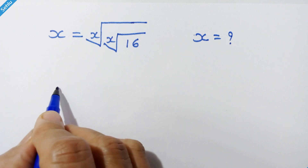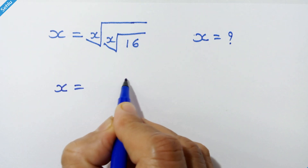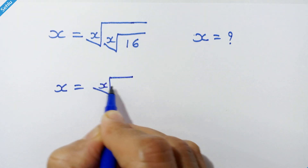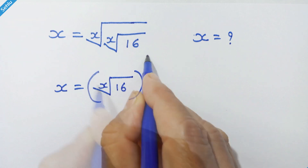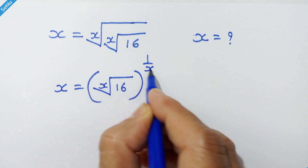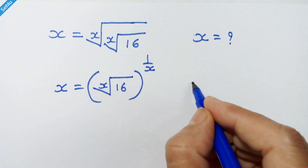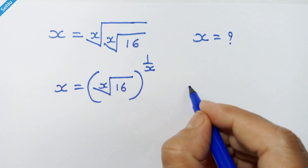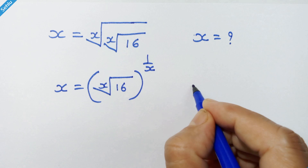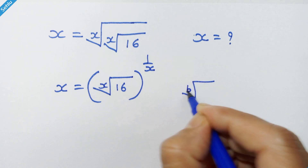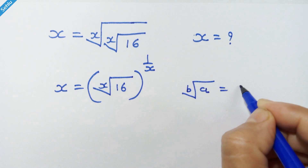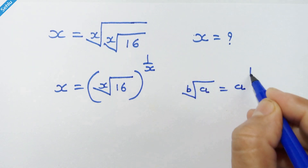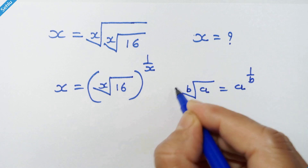So we have x is equal to x root of 16, whole raised to 1 upon x, because we all know this rule: if we have b root of a, then it can be written as a raised to 1 upon b.